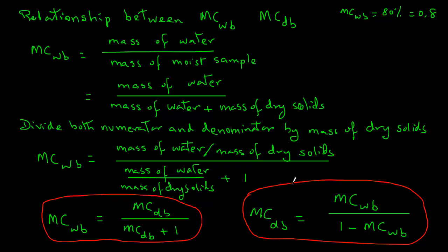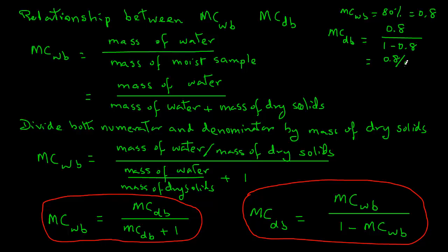So if we want to find out moisture content dry basis, we will use one of these equations we just developed. Moisture content dry basis equals 0.8 — which is the moisture content wet basis — divided by 1 minus 0.8. So we have 0.8 divided by 0.2, and that gives us 4.